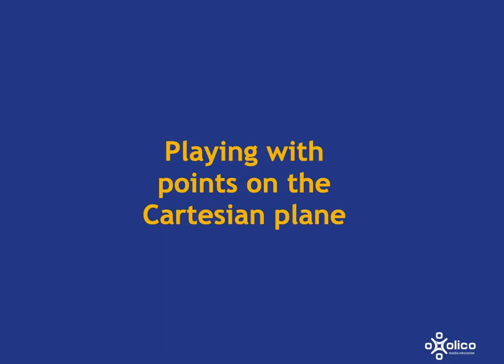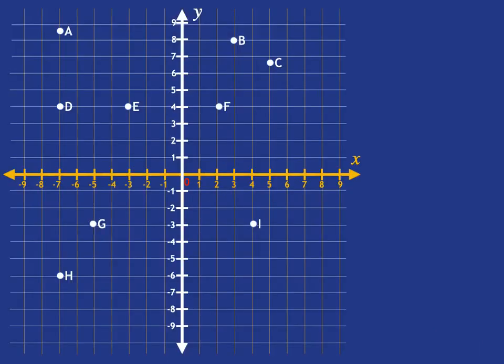Let's play with points on the Cartesian plane. Here I have my Cartesian plane with a whole lot of points plotted on it. First, let's identify which point has the coordinates 4, negative 3.